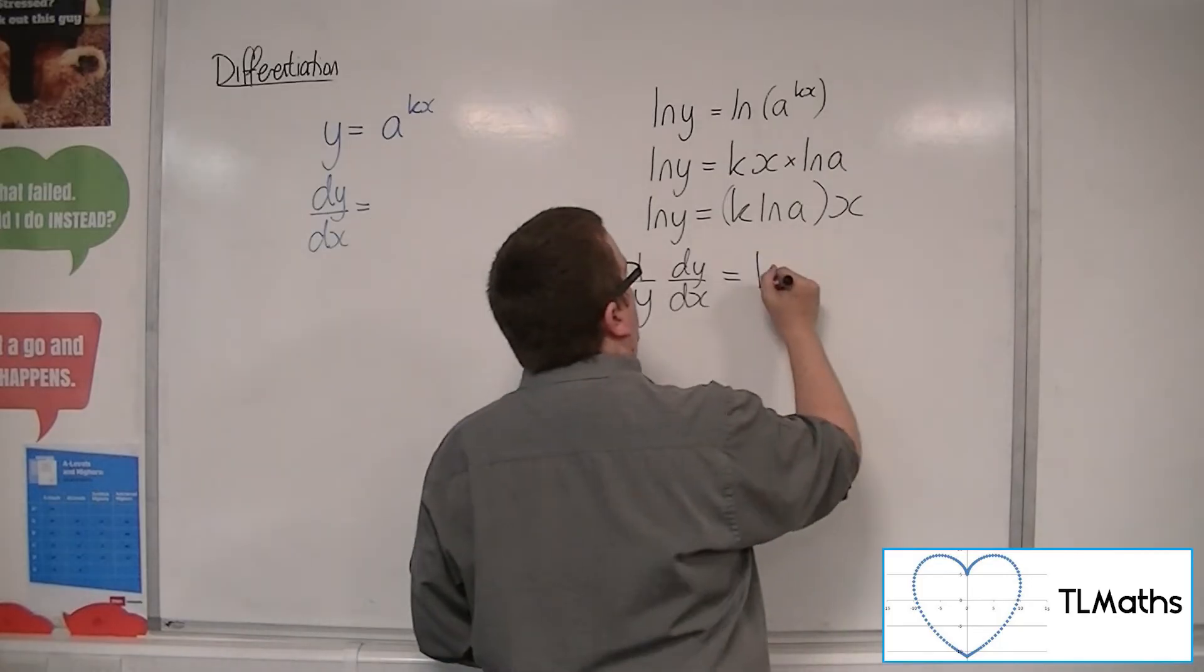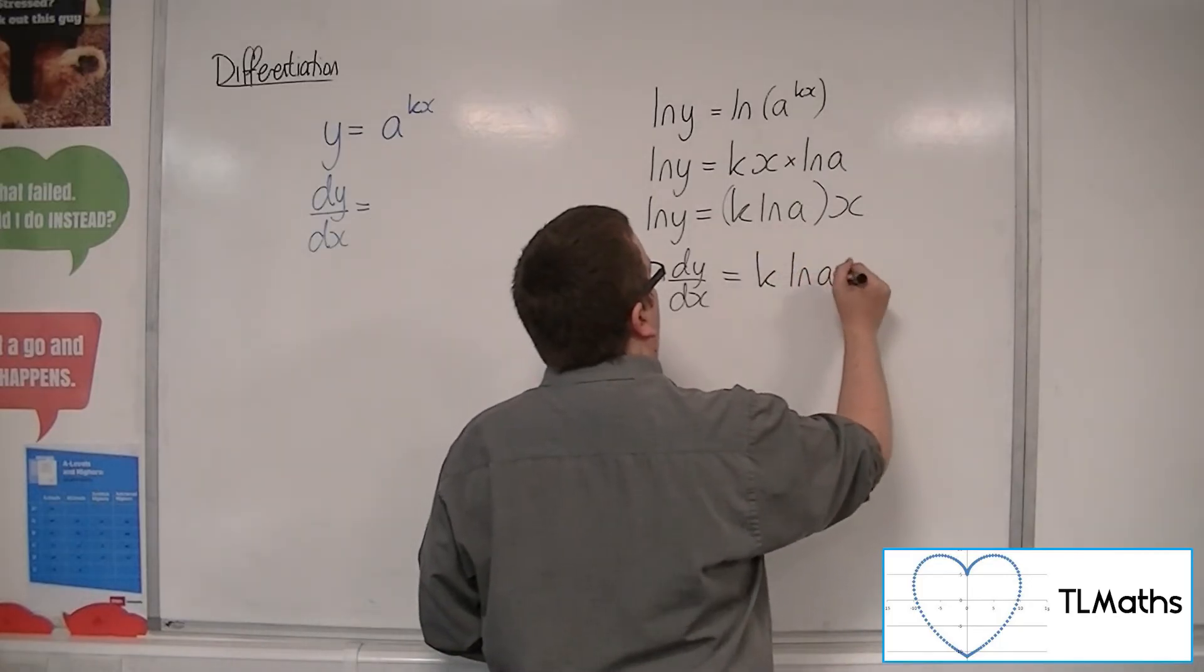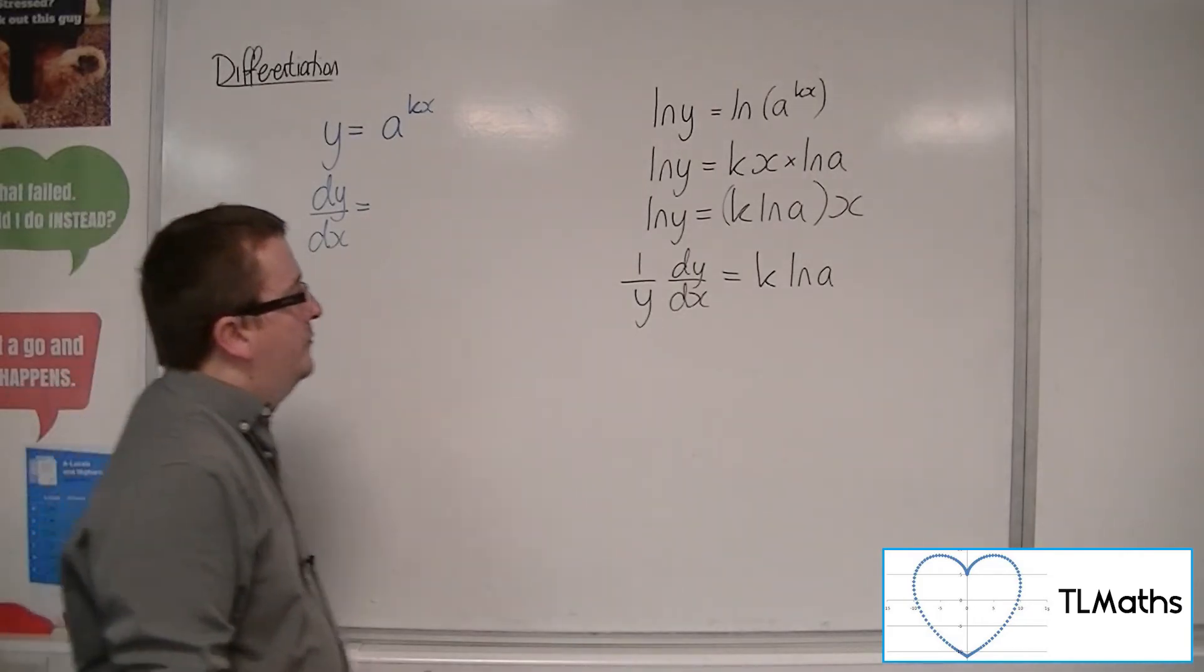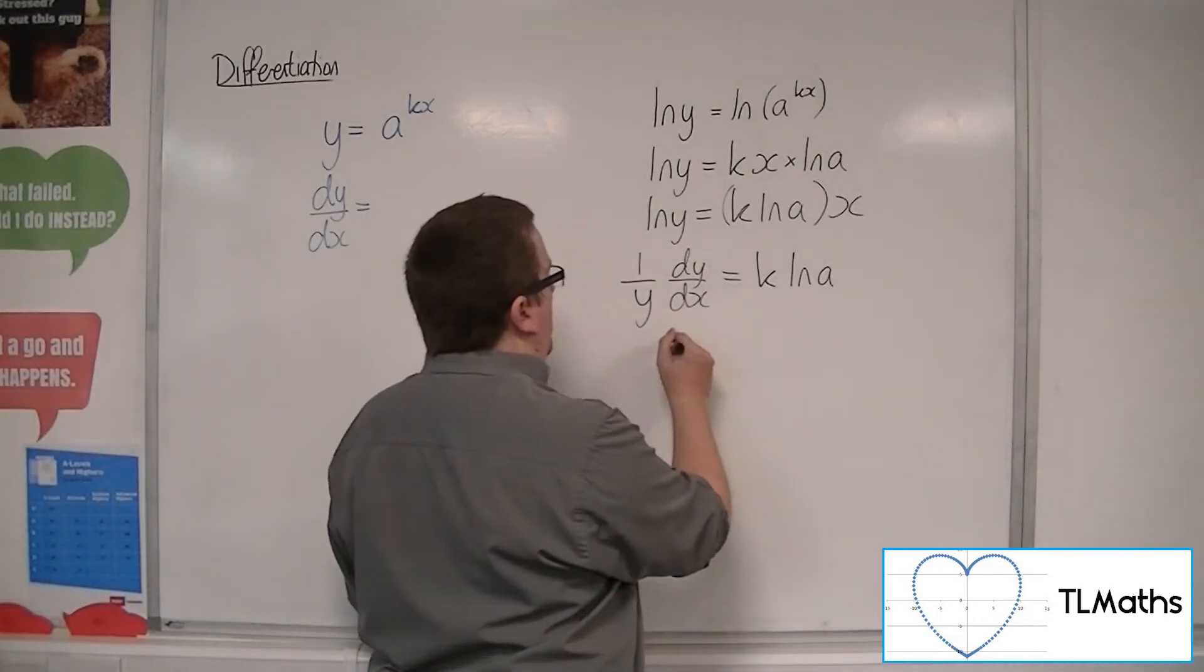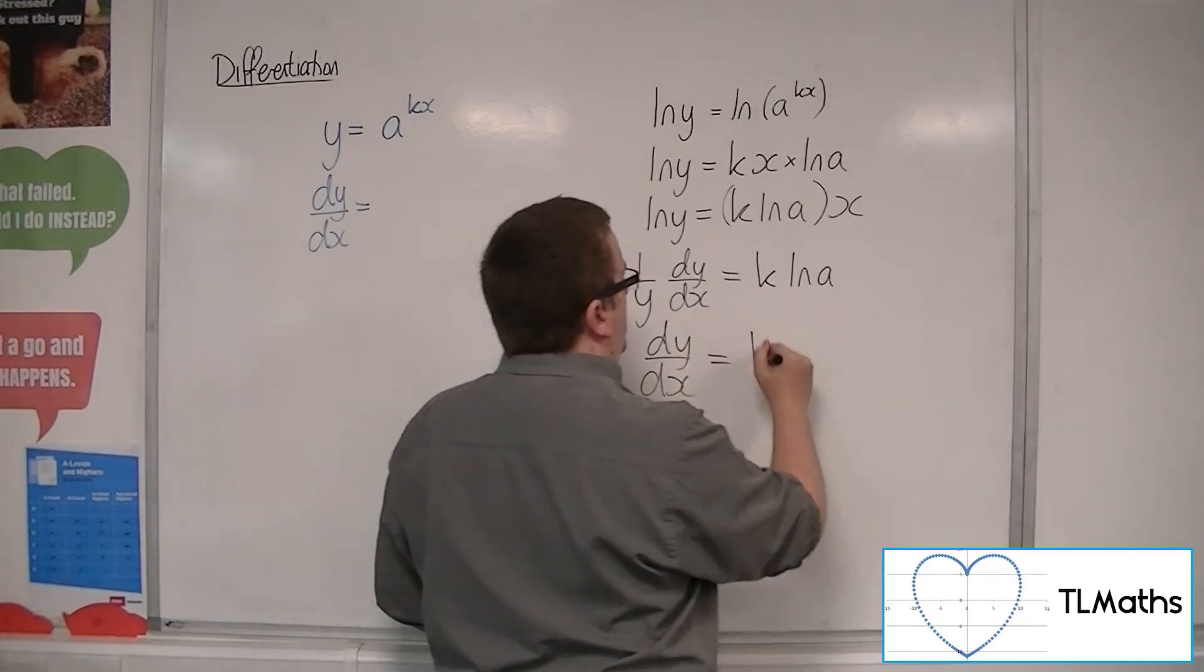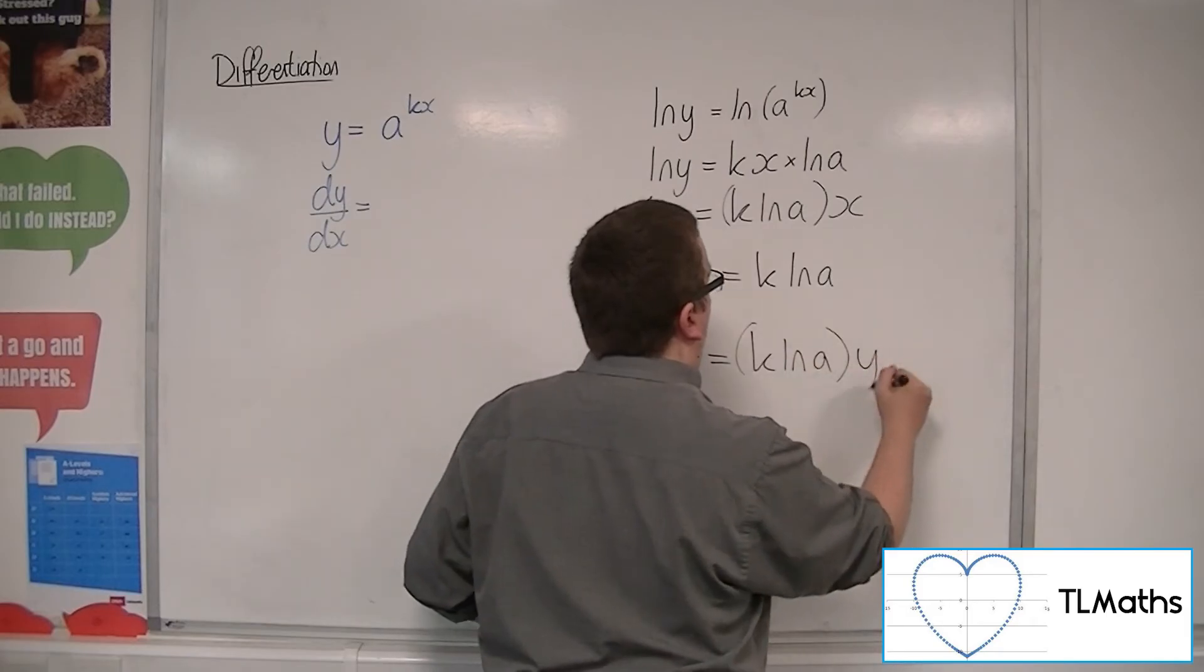The right-hand side will just be k ln of a. The x would have gone. I can then multiply both sides by y, so k ln of a times y.